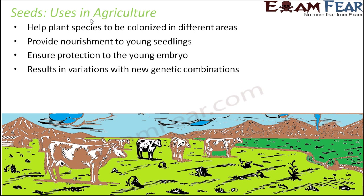Seeds allow for new genetic combinations and variations. Since seeds are small, easy to carry, and can be stored easily because they are dehydrated and dormant, you can store a large variety of seeds. When you want to grow new plants, you can fuse different seed varieties with one another to make new combinations, which can give rise to variations.